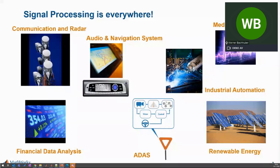Signal processing is basically everywhere: communications and radar systems, audio and navigation systems, and automotive as well. ADAS and autonomous driving are driving factors of signal processing. Industrial automation, medical devices, renewable energy, and financial data analysis are all important industry segments where signal processing is applied. I want to concentrate today more on the communications and radar sections, though all the other sections can use similar approaches.